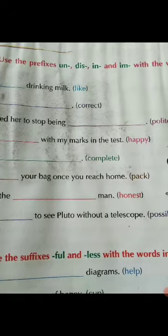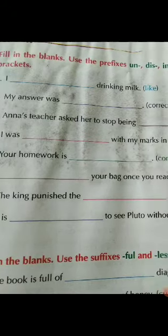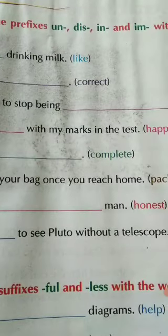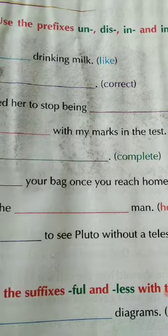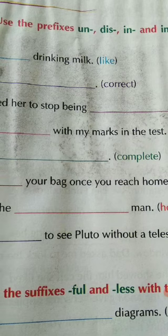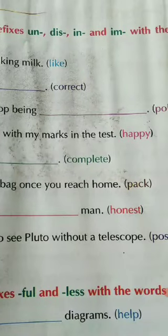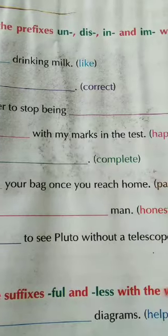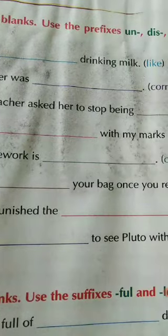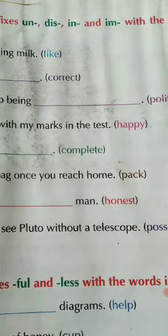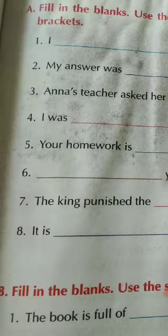Anna's teacher asked her to stop being impolite — add 'im-' to 'polite' to get 'impolite'. 'I was unhappy with my marks in the test' — 'happy' becomes 'unhappy'. 'Your homework is incomplete' — add 'in-' to 'complete'. 'Unpack your bag once you reach home' — 'pack' becomes 'unpack'.